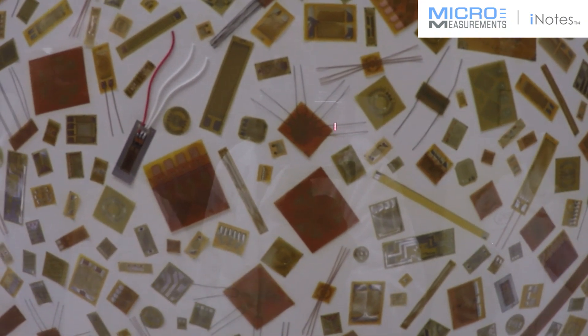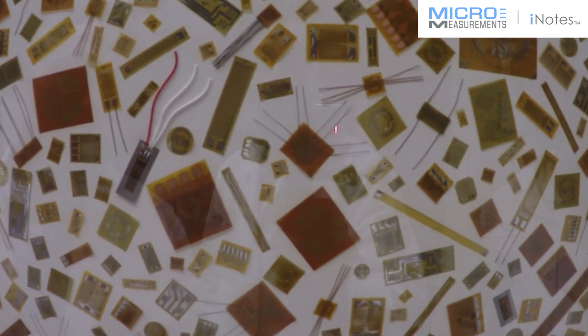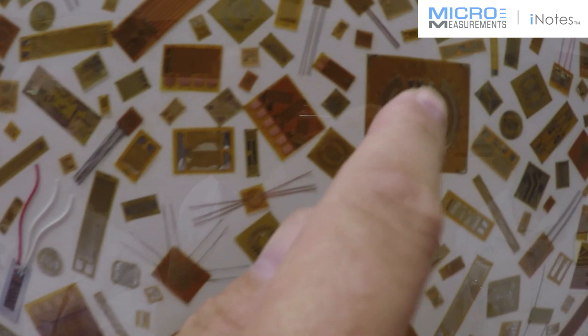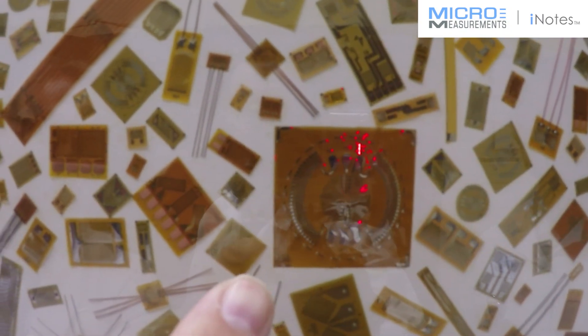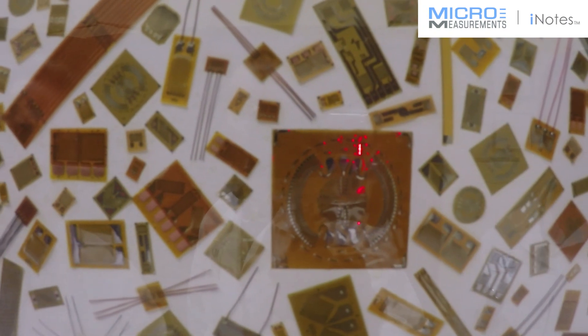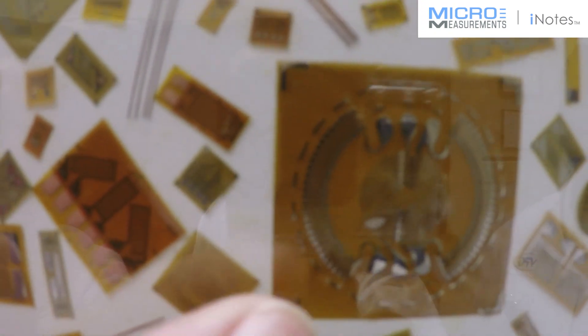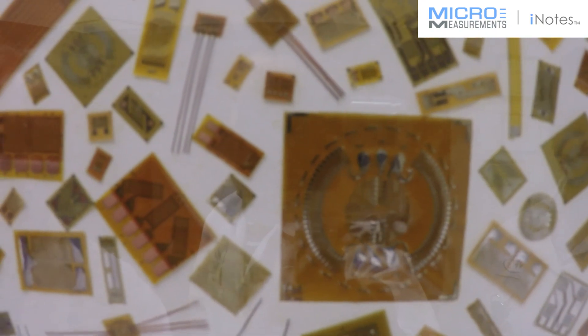In addition to that, you'll see some other kind of unusual or unique gauges like this big one right here. This is a circular diaphragm gauge. So if you were to take a pressure transducer and take it apart and look inside, you might see a gauge inside it that looks just like that.